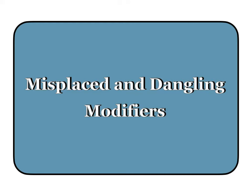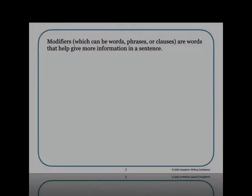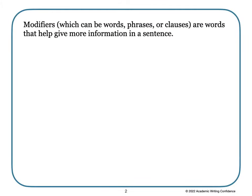Modifiers help to explain things in a sentence, but if they are misplaced or dangling, they can actually cause confusion. Modifiers, which can be words, phrases, or clauses, are words that help give more information in a sentence. They can be adjectives or adverbs.